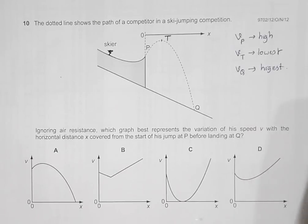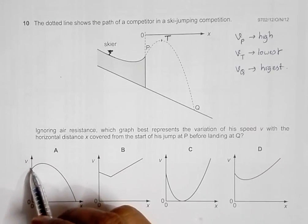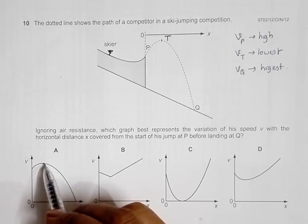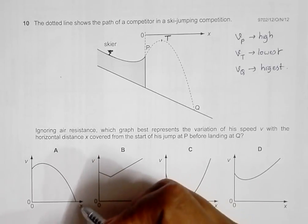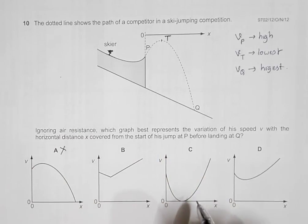So if I go through these choices, choice number A can be avoided because it shows that the velocity in the beginning is slightly less, at T it is highest, and at Q it is lowest. So this cannot be possible.